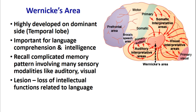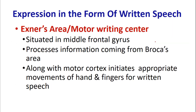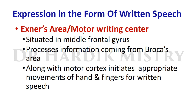If the Wernicke's area is damaged, the motor aspect is normal, but the understanding of auditory, visual, and tactile words cannot be processed. Regarding expression in the form of written speech, it is handled by Exner's area, also known as the motor writing center, situated in the middle frontal gyrus. It processes information coming from Broca's area and, along with the motor cortex, initiates appropriate movements of the hand and fingers for written speech.